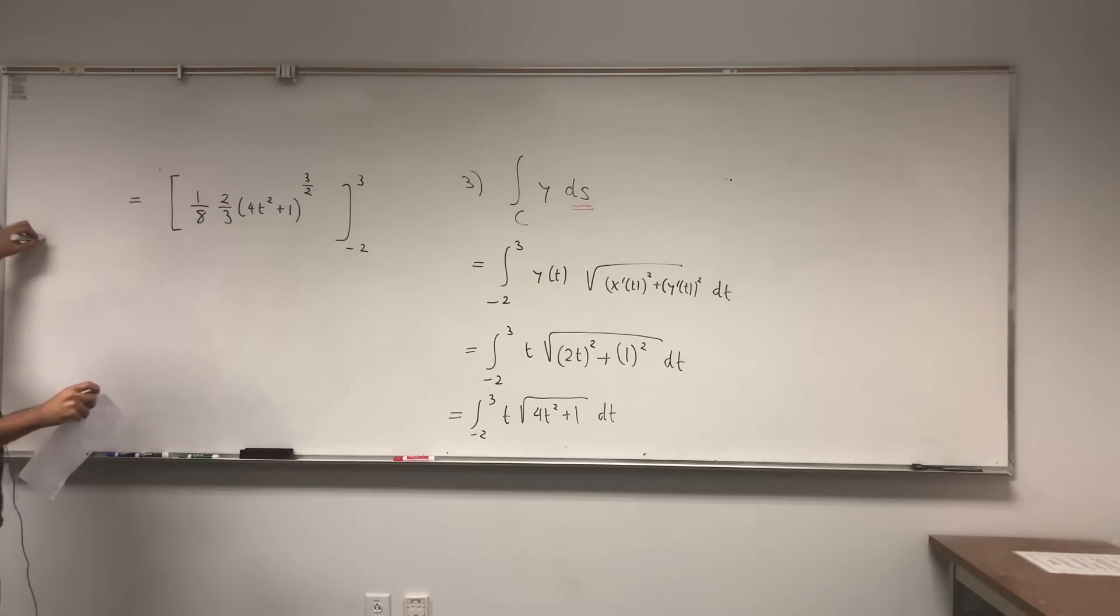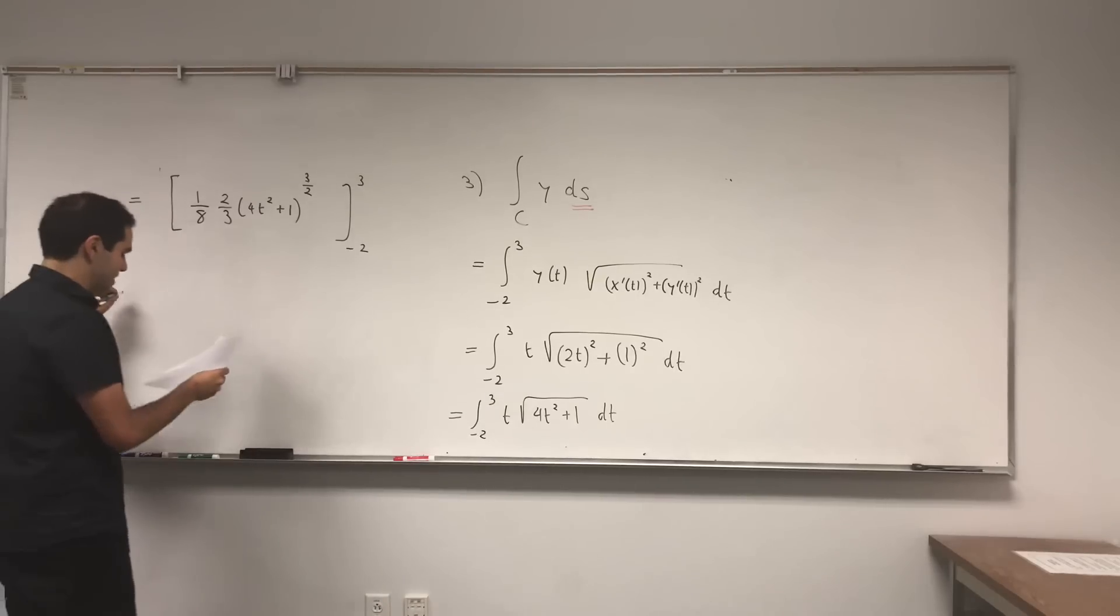Or if you're uncomfortable with this argument, you would let u be 4T squared plus 1 and do your usual u-substitution business.